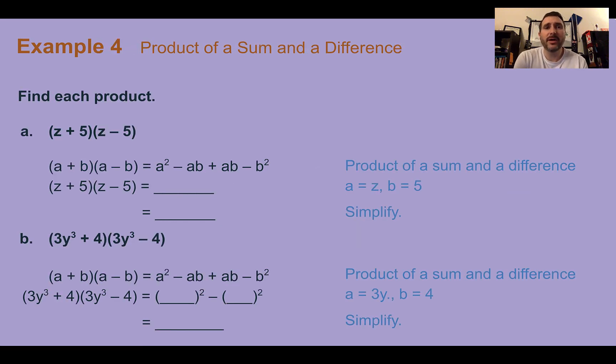Example 4: Product of a sum and difference. Find each product. If you don't recognize it immediately, you can always multiply any of these out. But I can see here that I pretty much have the same thing with different signs. So I know that this is going to follow the same pattern of a² minus b², where the A's and the B's multiplied together will cancel each other out. So z times z is z², and then 5 times 5 is 5². Simplify that 5 squared and I would end up with z² - 25.